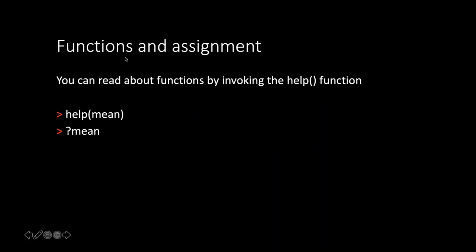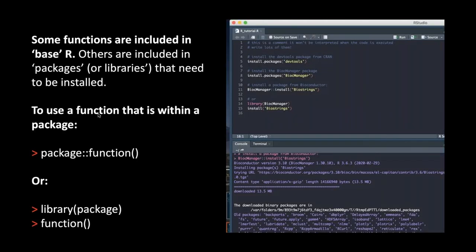If you have a function and aren't sure what it does, you can use the help function on it and it will return its help menu. Sometimes these help menus are quite opaque if you're not used to reading them, because they're written by people who know R really well. You can also type a question mark followed by the function name as a shortcut. These are two ways to find out what a function does and how to use it — and also just Google it.